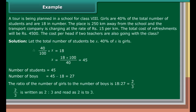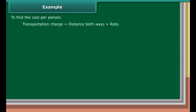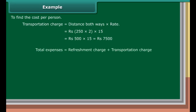2 upon 3 is written as 2:3 and read as 2 is to 3. To find the cost per person: transportation charge equals distance both ways into rate, which is equal to rupees 250 into 2 into 15, which equals rupees 500 into 15, which is equal to rupees 7,500. Total expenses equal refreshment charge plus transportation charge, which is equal to rupees 4,500 plus rupees 7,500, which is equal to rupees 12,000.